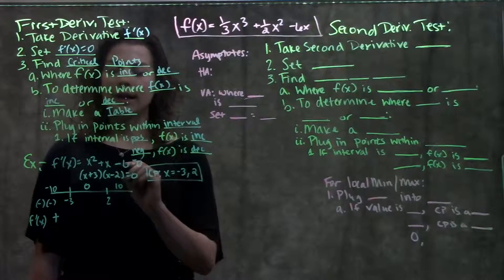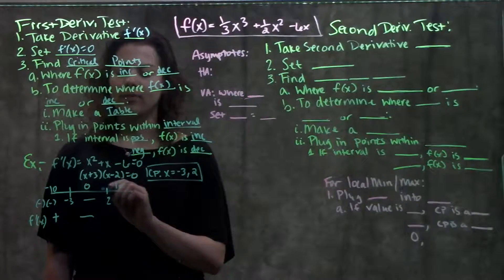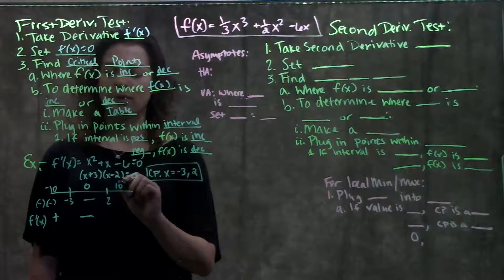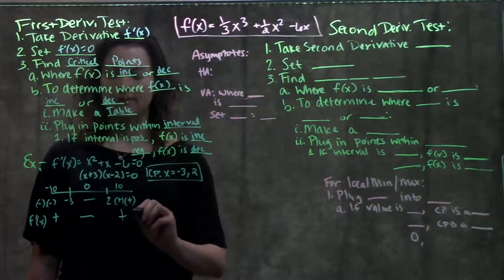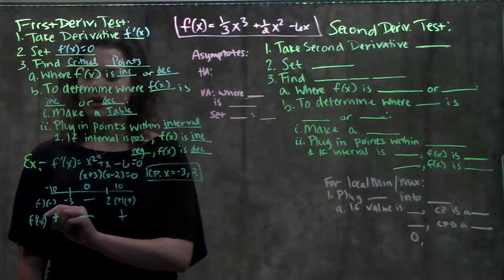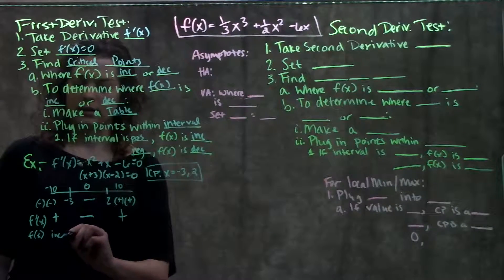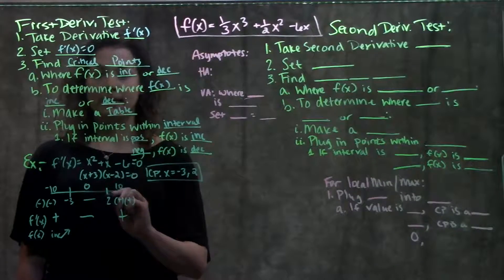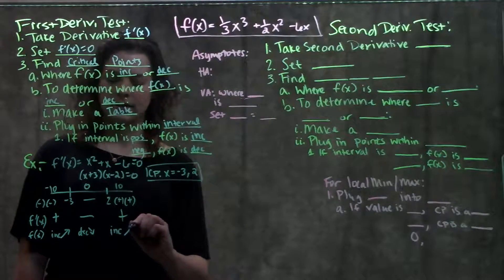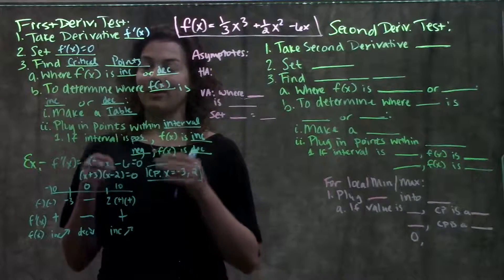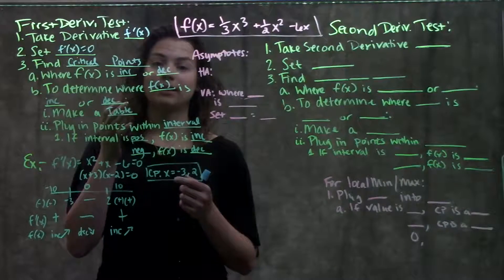In the next interval, plugging in 0, f prime of x ends up being negative. On the right interval, plugging in positive 10 into the factored form, I get a positive times 10 minus 2, which is also positive — positive times positive gives me positive. So if my derivative is positive, f of x is increasing; if f prime is negative, my original function is decreasing; and again on the right it's positive, so f of x is increasing. That was the first derivative test — it gives us critical points and tells us where f of x is increasing and decreasing.